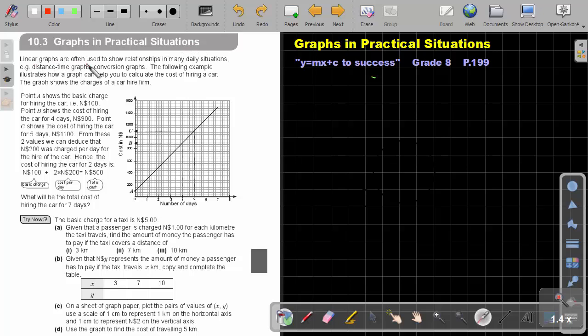Linear graphs are often used to show relationships in many daily situations. For example, distance-time graphs, conversion graphs. The following example illustrates how a graph can help you calculate the cost of hiring a car. The graph shows the charges of a car hire firm.